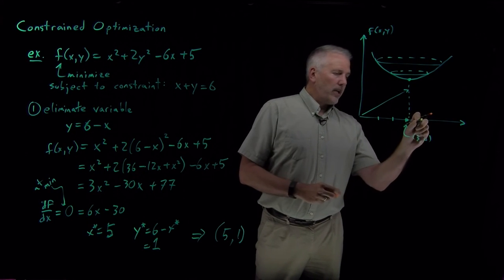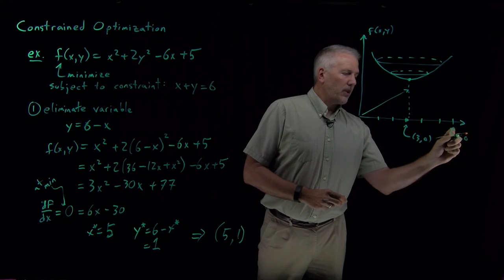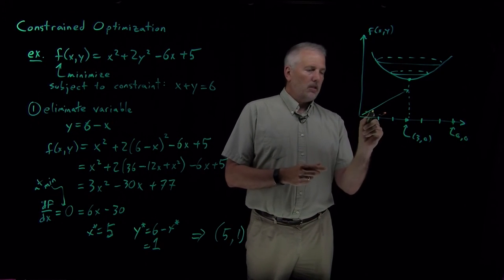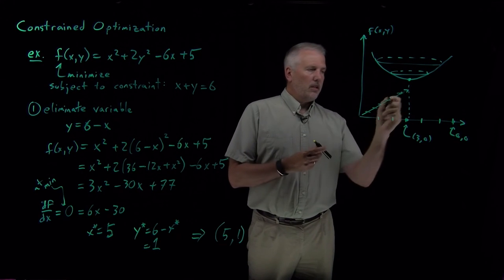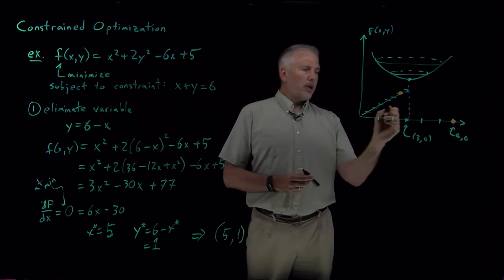There's a few ways I can obey that constraint. I can have x and y add up to 6 if I'm sitting at 6, 0, or if I'm sitting at 0, 6, or 3, 3.